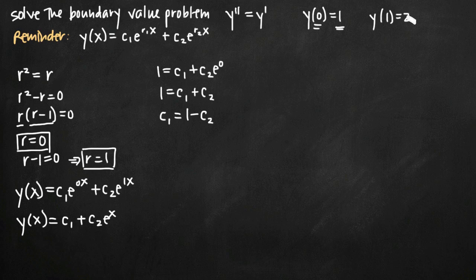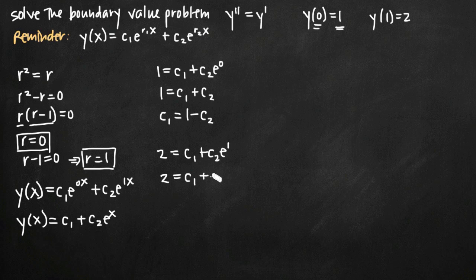Now let's use the second initial condition y(1) = 2. Plugging into our general solution, we get 2 = c₁ + c₂e^1, which simplifies to 2 = c₁ + c₂e. Notice both equations still involve c₁ and c₂. We take the value we found for c₁, which is 1 minus c₂, and substitute it into this equation to get it in terms of c₂ only.